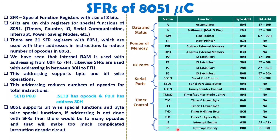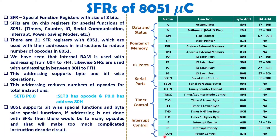We also have 2 registers for interrupt control: IE and IP. IE is used to enable interrupts and IP is used to define interrupt priority. One more register is PCON, used to control power. 8051 supports 2 power saving modes: idle mode and power saving mode — these will also be explained in future videos.